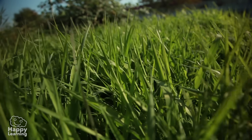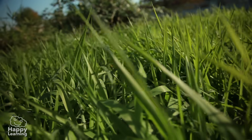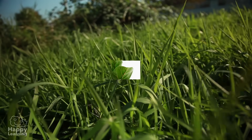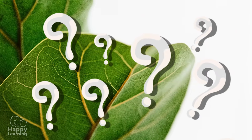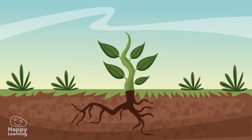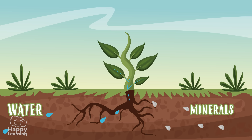By the way, chlorophyll is what gives all plants their green colour. But how does photosynthesis take place? Look at this plant! As you can see, its roots are anchored to the ground and through them the plant absorbs water and minerals in the soil.